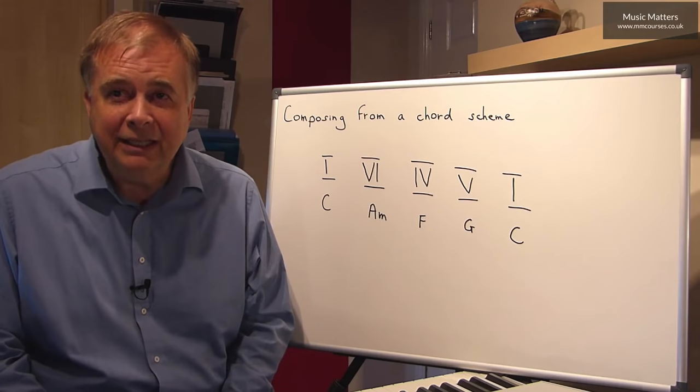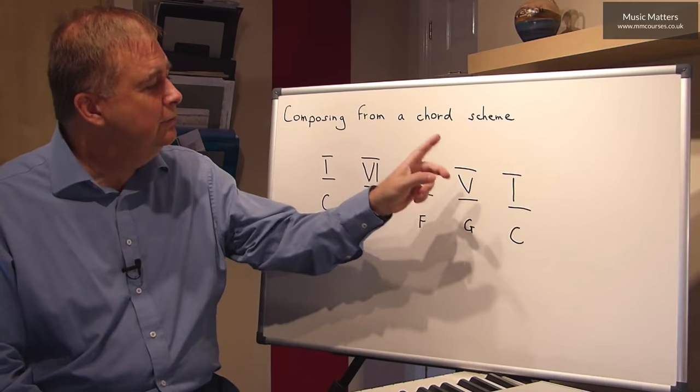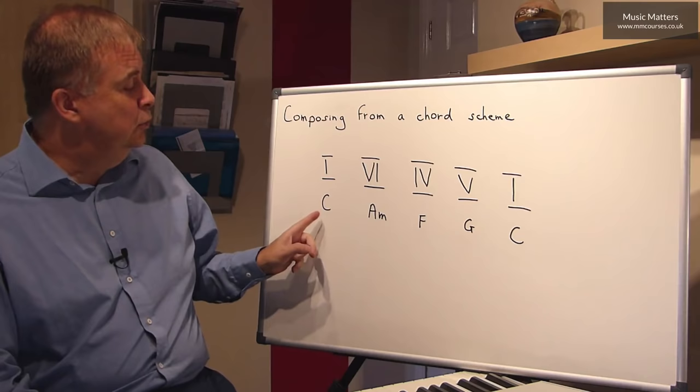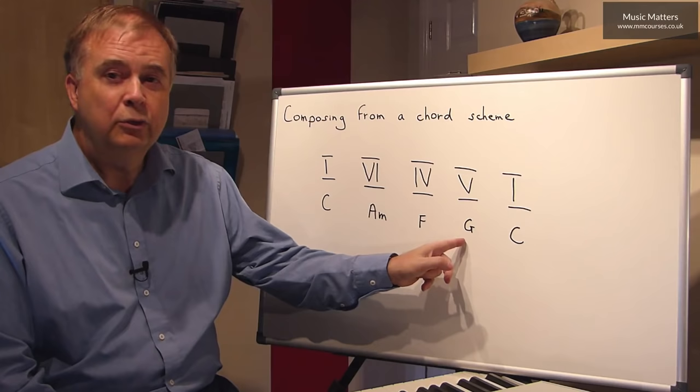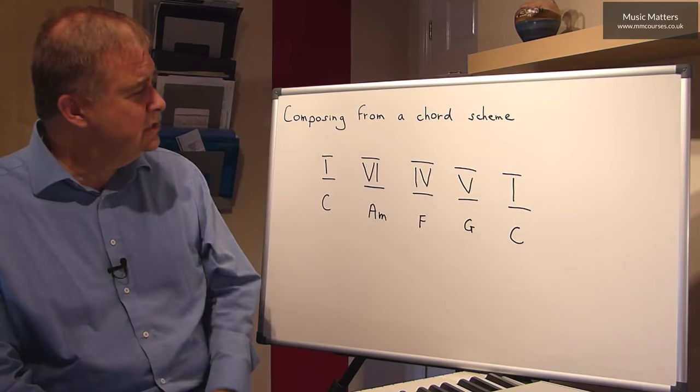So chord I, followed by chord VI, followed by chord IV, followed by chord V, followed by chord I. Or to put that another way, a chord of C, followed by a chord of A minor, followed by a chord of F, followed by a chord of G, followed by a chord of C.